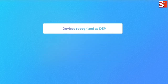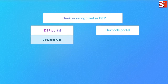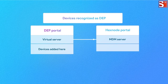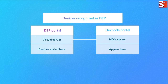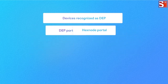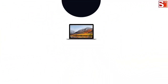Once you have your devices recognized as DEP devices, you can set up virtual servers on your DEP portal, each synced to a different MDM server. You can add or remove devices and move them between these virtual servers, which automatically appear in the linked MDM. Check out the next video on configuring DEP, linked in the description below, which covers how to enroll your devices with Hexnode MDM and have them fully configured for out-of-the-box use.